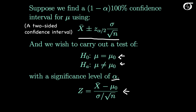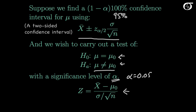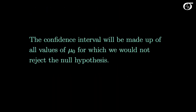Suppose we are using the same value of alpha in both places — so suppose alpha is 0.05 for the test, and we are using a 95% confidence interval. The alpha level is the same in both spots, and we are using a two-sided alternative. Then the confidence interval will be made up of all values of mu0 for which we would not reject the null hypothesis.